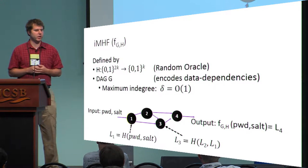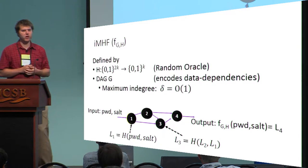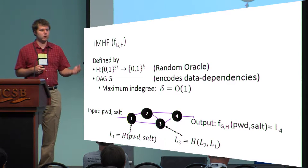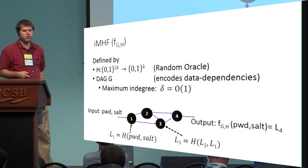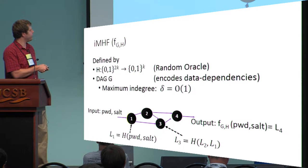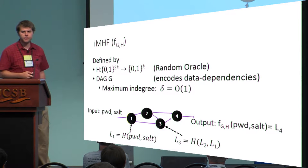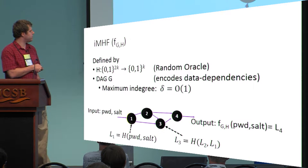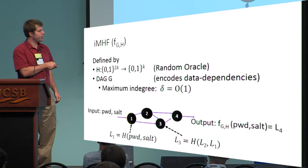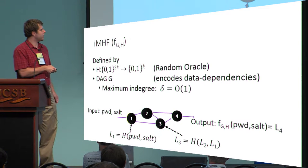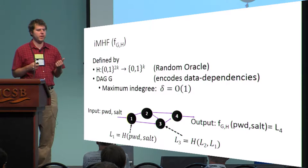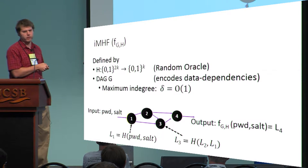A data-independent memory hard function, for our purposes, can be thought of as being defined by a compression function H, which we'll model as a random oracle, and a directed acyclic graph G, which encodes data dependencies during computation. As an example, the input to the function is the password and the salt. We compute the label of the first node by hashing the password value and the salt. The label of an internal node, for example node 3, is computed by hashing the labels of its parents — in this case, node 2 and node 1. Finally, the output of the data-independent memory hard function is just the label of the final node, in this case node 4.